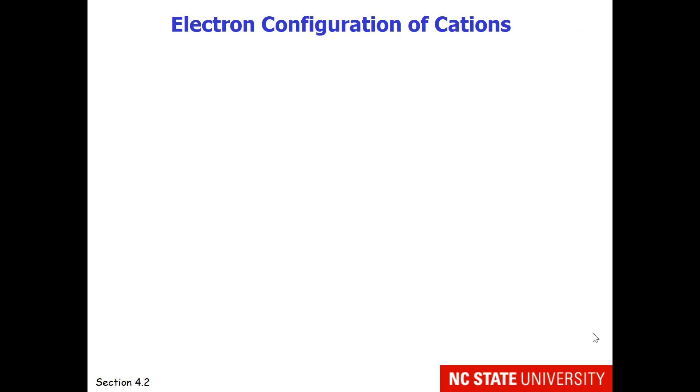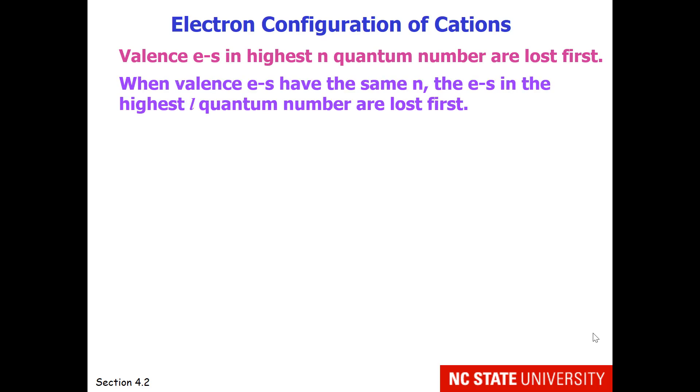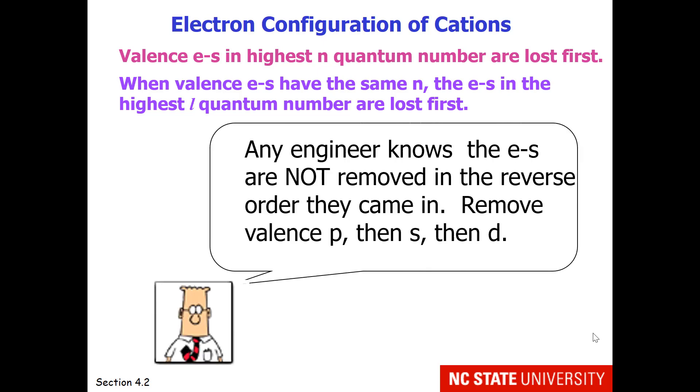Now that we've covered the charges, let's look at the electron configuration of cations. The valence electrons in the highest n quantum number are lost first. When valence electrons have the same n, which is the same principal quantum number, the electrons in the highest l quantum number are lost first. So this means that electrons are not removed in the same order they were added.